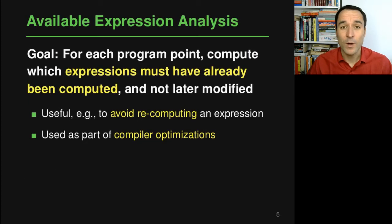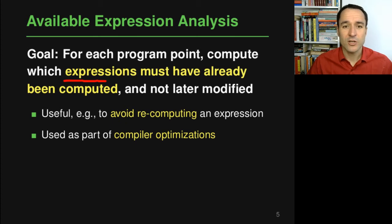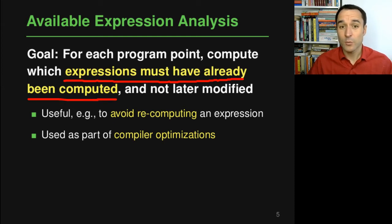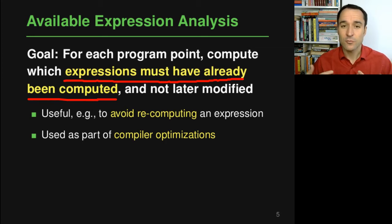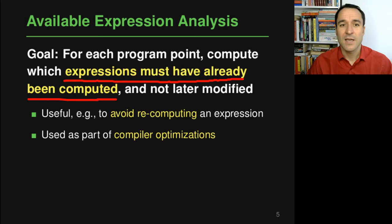Let's start with the available expressions analysis. The goal is to compute, for every point in the program, which expressions must have already been computed and are not later modified. This is useful to avoid recomputing an expression if you know it has already been computed and hasn't changed — you can reuse the previously computed result. Compiler optimizations do exactly this: they optimize code by avoiding recomputation, sometimes based on this kind of available expressions analysis.